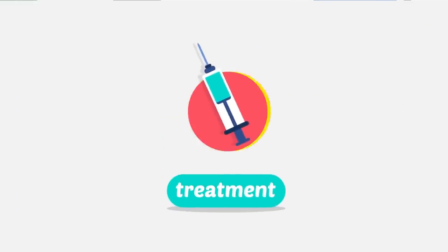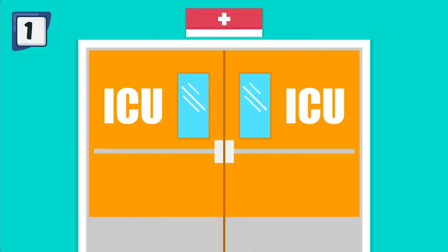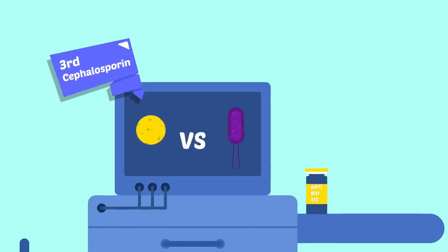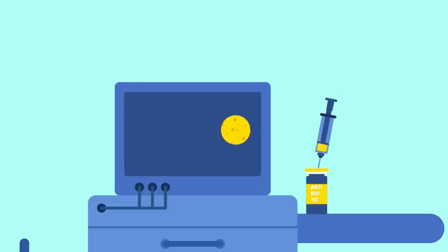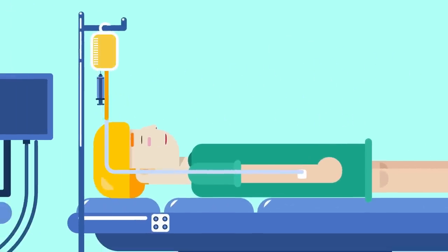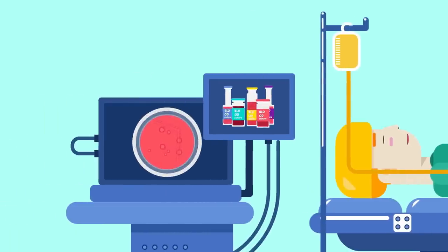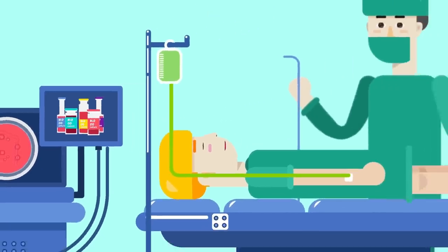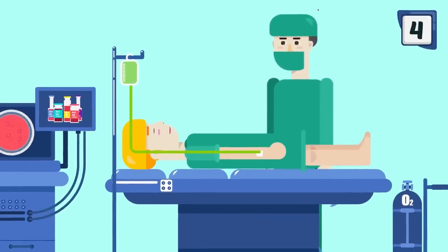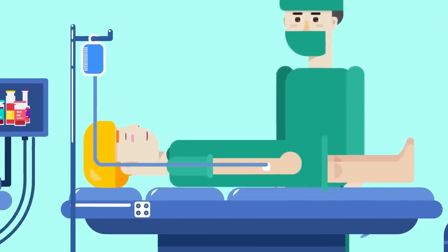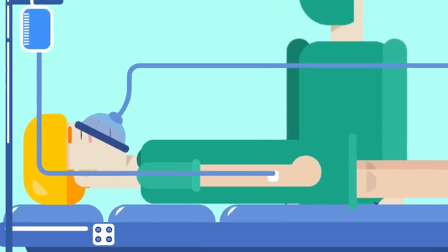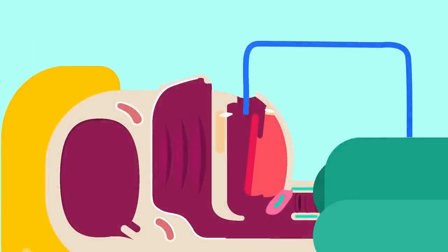Treatment: 1. Hospitalization — essential because of the danger of respiratory obstruction. 2. Antibiotics — ampicillin or third-generation cephalosporin are effective against H. influenzae and are given parenterally without waiting for throat swab and blood culture results. 3. Steroids — given in appropriate doses to relieve edema and may obviate the need for tracheostomy. 4. Adequate hydration — patient may require parenteral fluids. 5. Humidification and oxygen. 6. Intubation or tracheostomy may be required for respiratory obstruction.